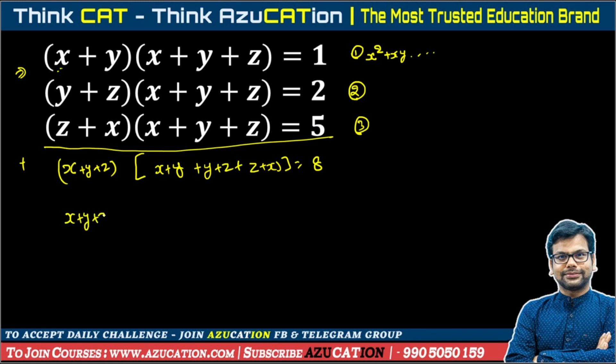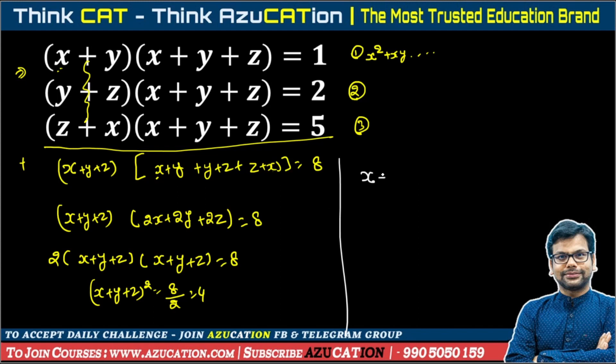So this becomes x plus y plus z, which is common. Inside, x plus x is 2x, plus 2y, plus 2z, is equal to 8. So we have x plus y plus z times 2 times x plus y plus z is equal to 8. We get x plus y plus z all square becomes 4. So the output we get is x plus y plus z is equal to plus minus root 4, that is plus minus 2. So x plus y plus z is equal to either 2 or equal to minus 2. This will be your first case and this will be your second case.